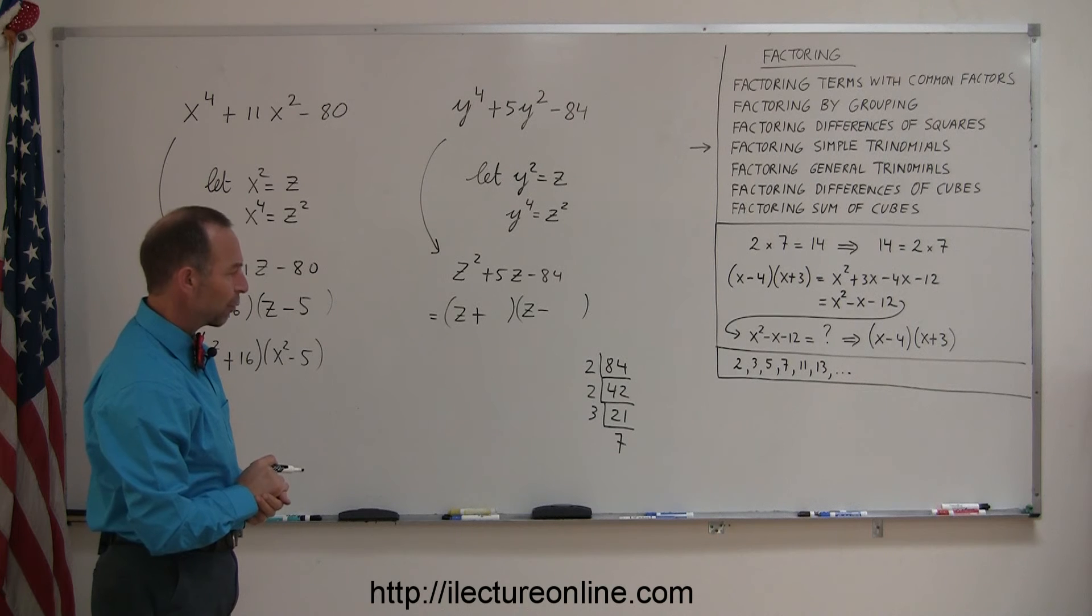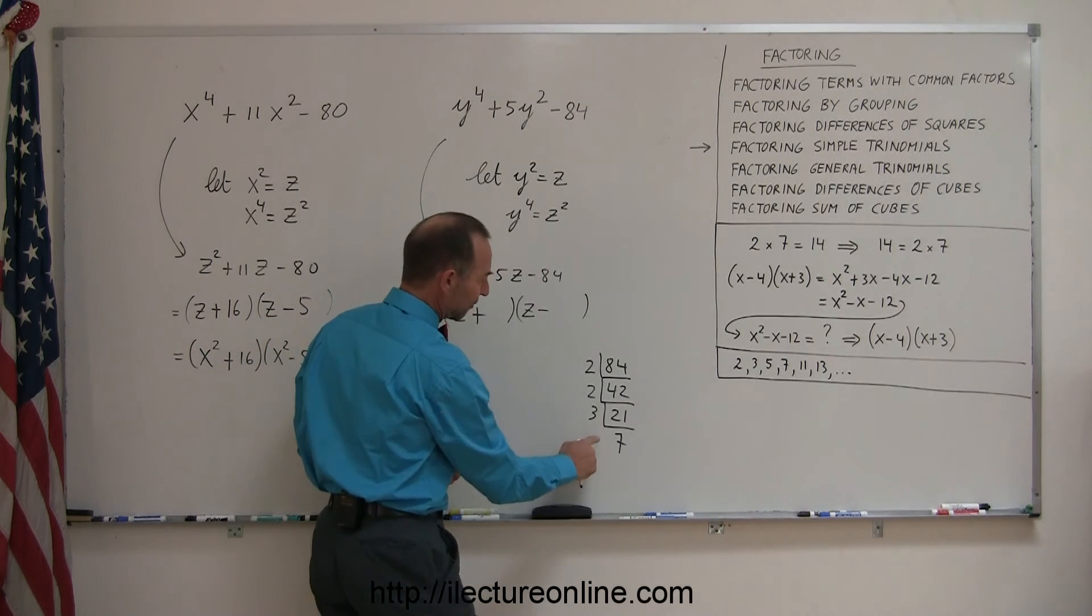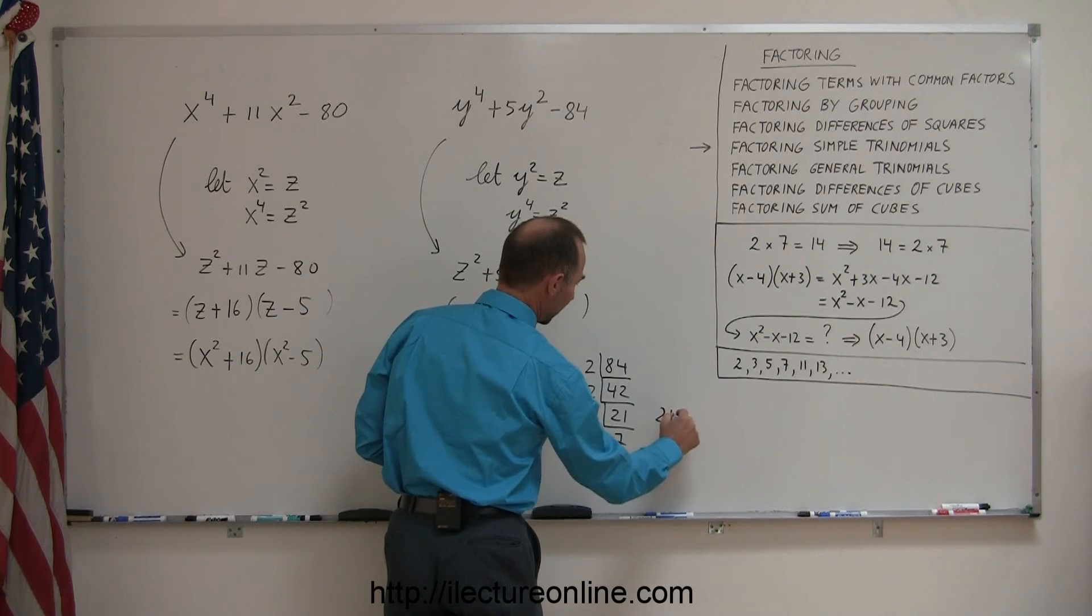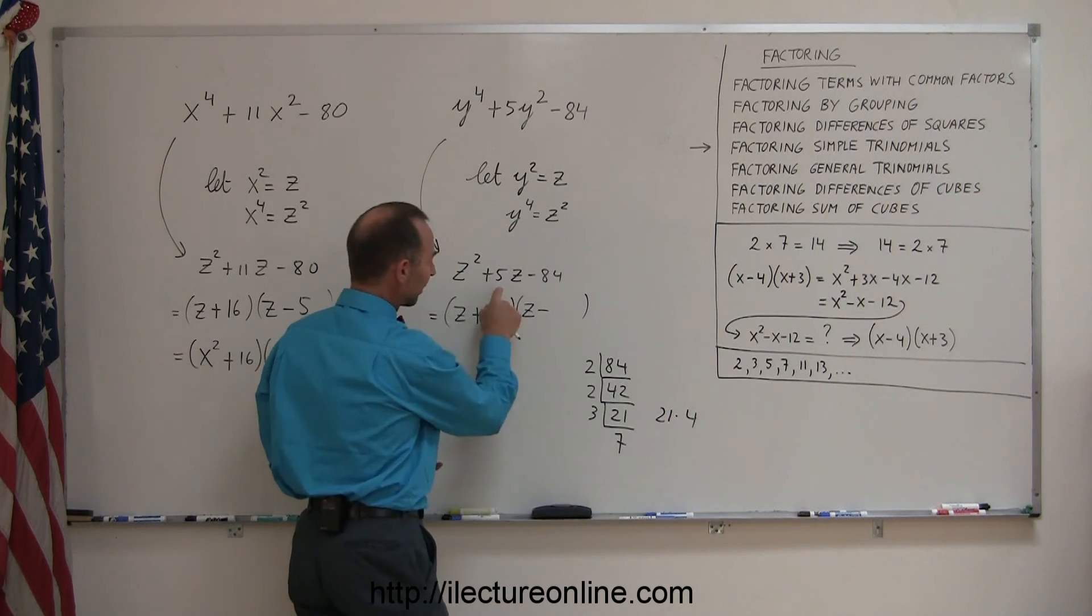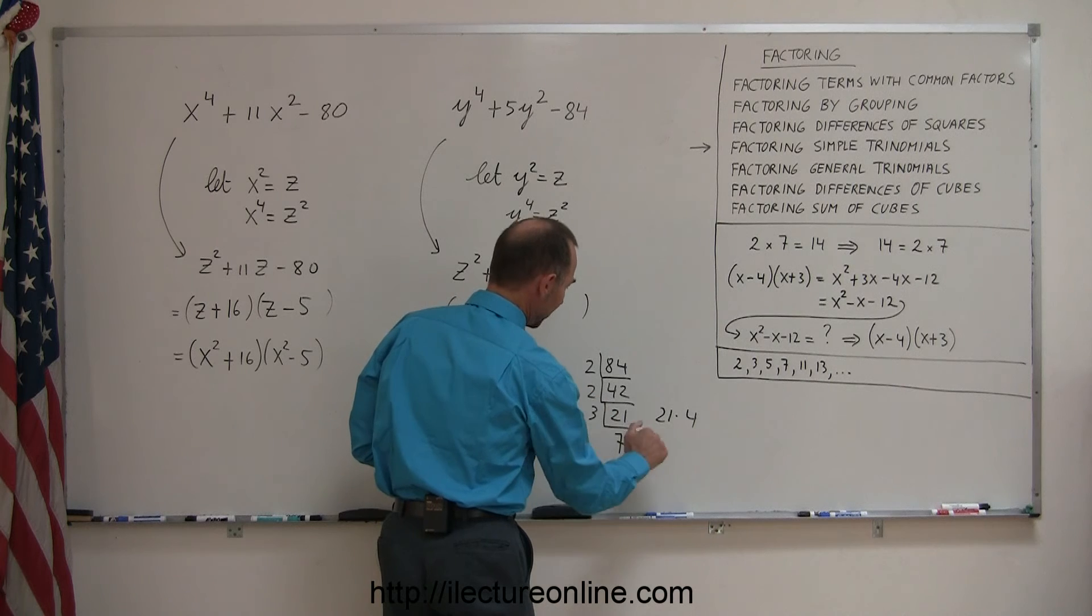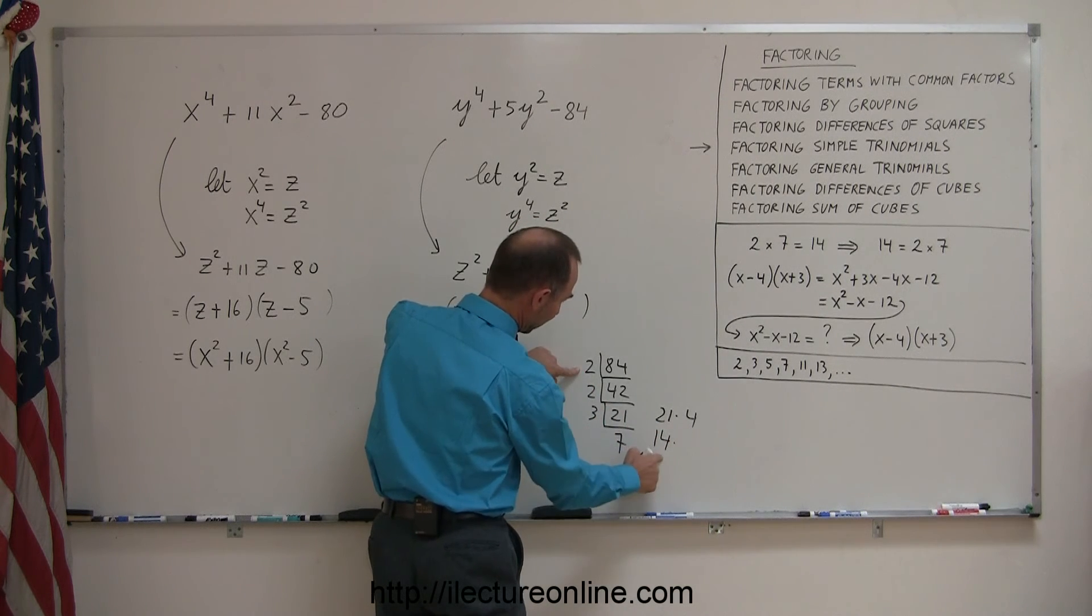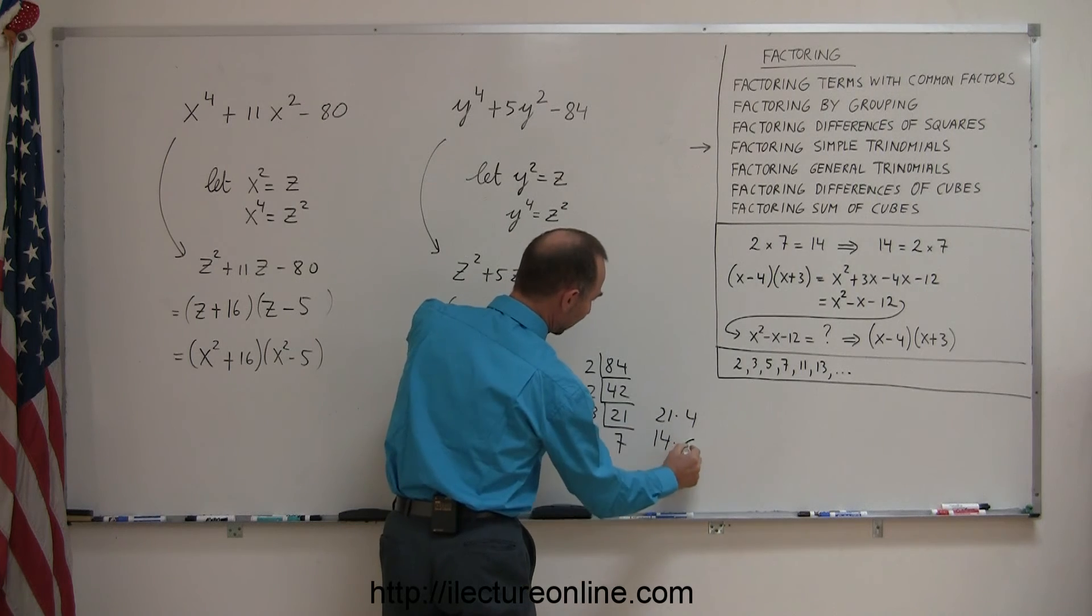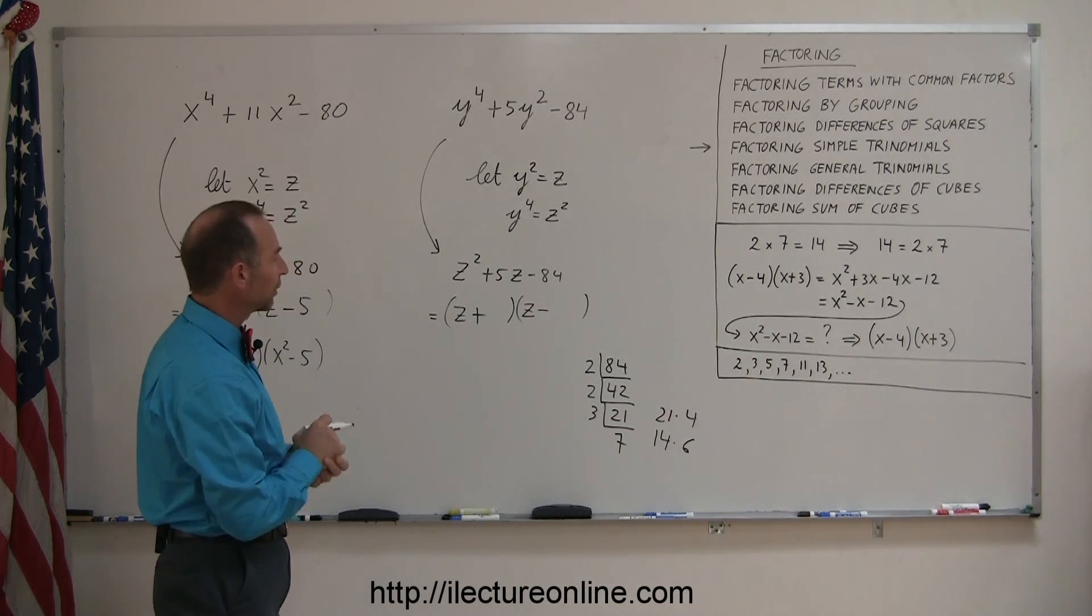So now we're looking for two numbers, when you multiply you get 84. For example, I can say 84 can be found by multiplying 21 times 4, but then if I add them together I will not get 5. I can multiply 2 times 7 to get 14, and 2 times 3 to get 6. 6 times 14 is 84, but when I add them together I will not get a 5.